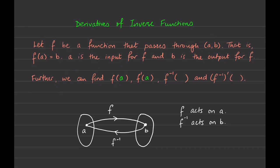Similarly, for f inverse, the input for the inverse function is the output of the original function. So the output of f was b — that will be the input of f inverse. And if we find the derivative of the inverse function, we still have to plug in b. We cannot plug in a.